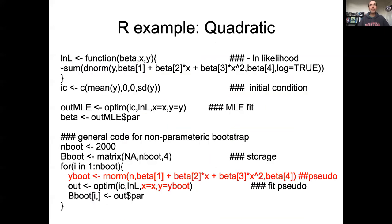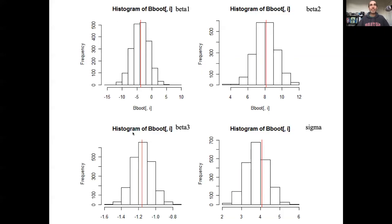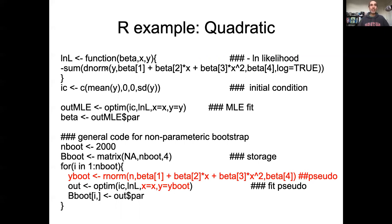Actually, let me jump back because there's something I forgot to mention about the parametric bootstrap: the line of code in the likelihood and the line of code for simulating data are virtually identical. If I'm doing a parametric bootstrap, I copy and paste the line for my likelihood, get rid of the sum, change dnorm to rnorm, change my data to my sample size — no need for logging. Otherwise, the equation stays the same.